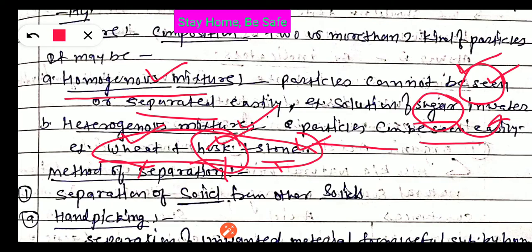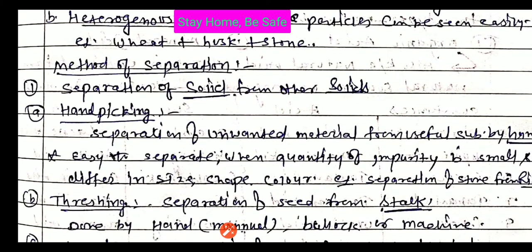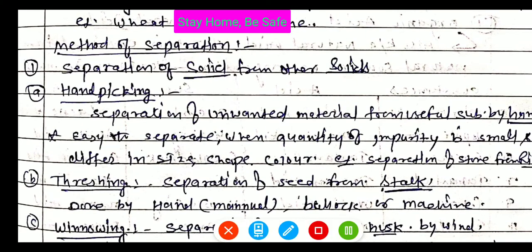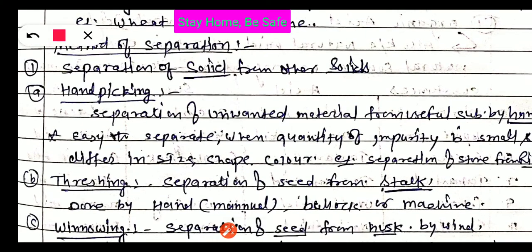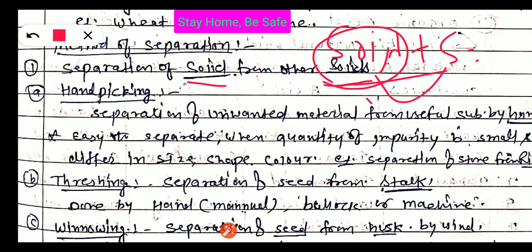Clear with examples. Now, methods of separation. How could you separate these different types of mixtures? Firstly, we will look at separating solid from other solid, meaning the mixture contains solid plus solid. The first method is the hand picking method. Hand picking means you separate solid substances manually, by hand.